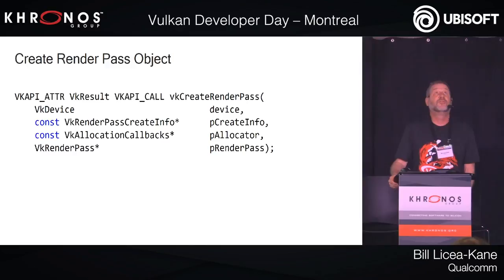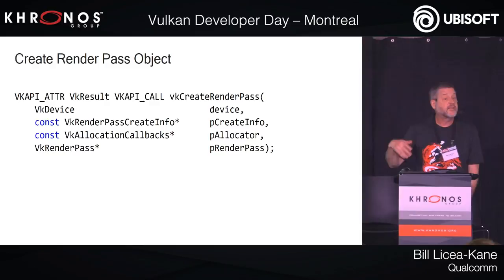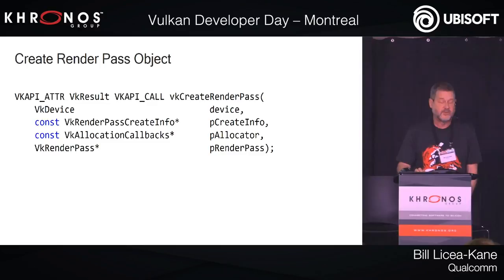To create a render pass object in Vulkan, you have calls to create an object. You pass in the device you want the object created on, you pass in a structure called create info, an optional allocator you can use to allocate or track host memory, and it returns the render pass object. This pattern is consistent for all the different create object APIs.